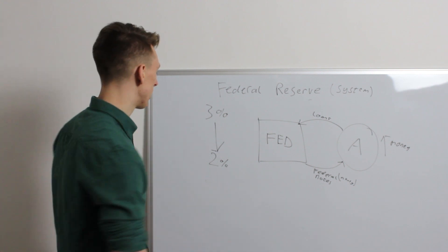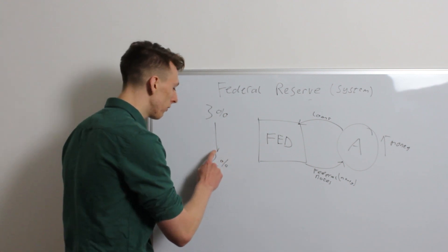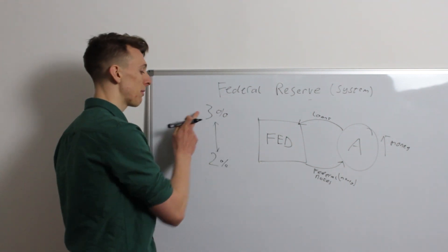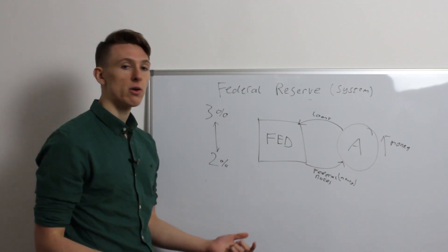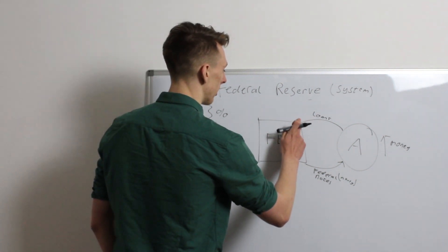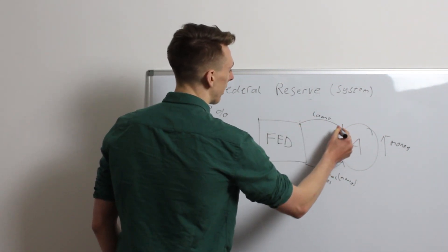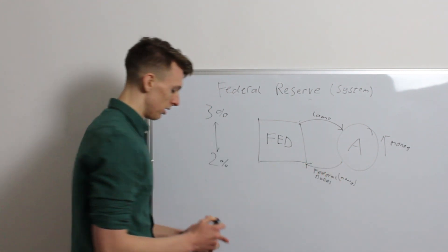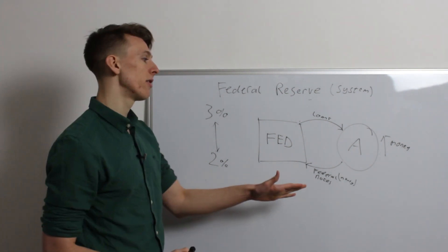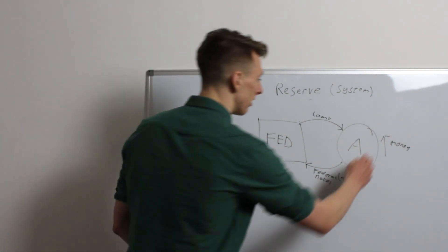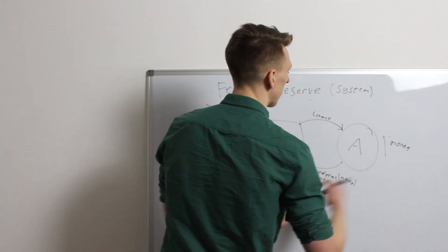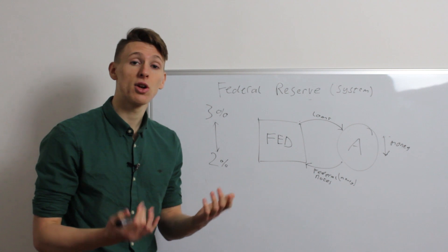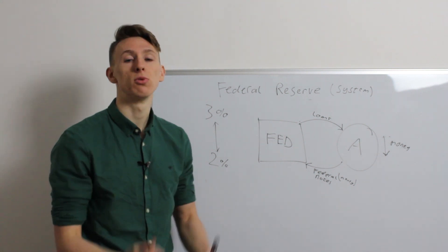Now, say conversely, that they wanted to move the target rate up, so say the effective rate is at 2%, and they want to move it to 3%, well, obviously, all they have to do is reverse this, right? They can sell back their loans that they bought earlier to the bank in return for Federal Reserve notes, thereby reducing the supply of money, and so, increasing the cost to borrow it, and so the rates will rise.